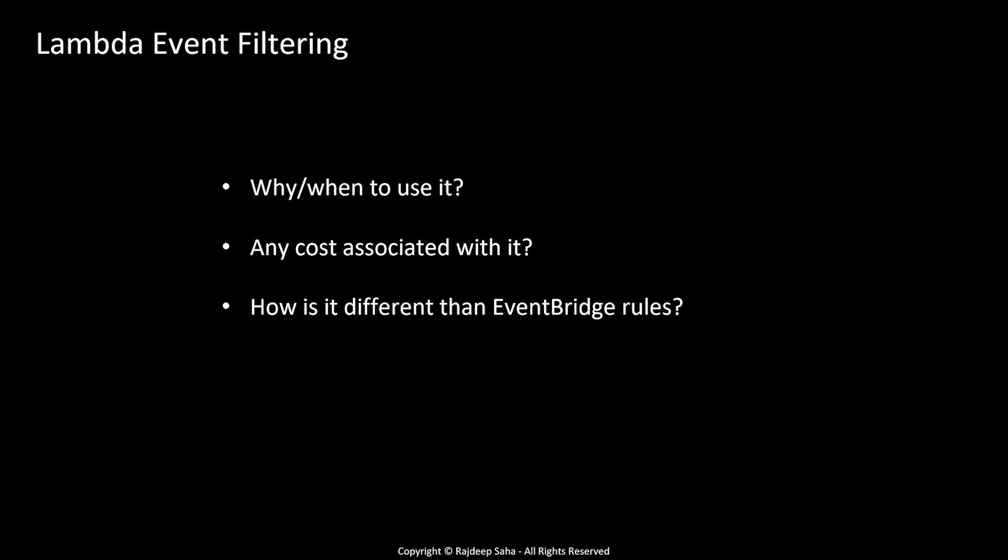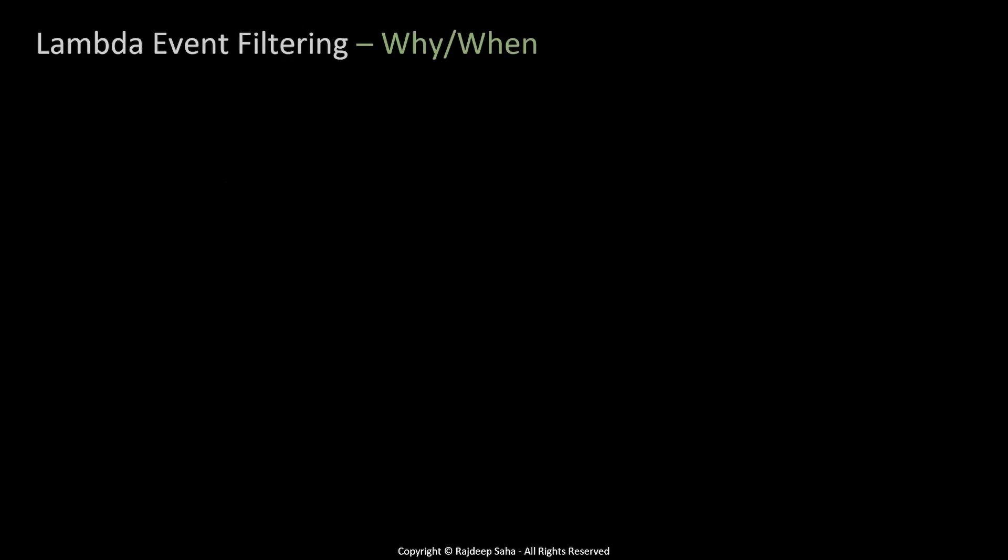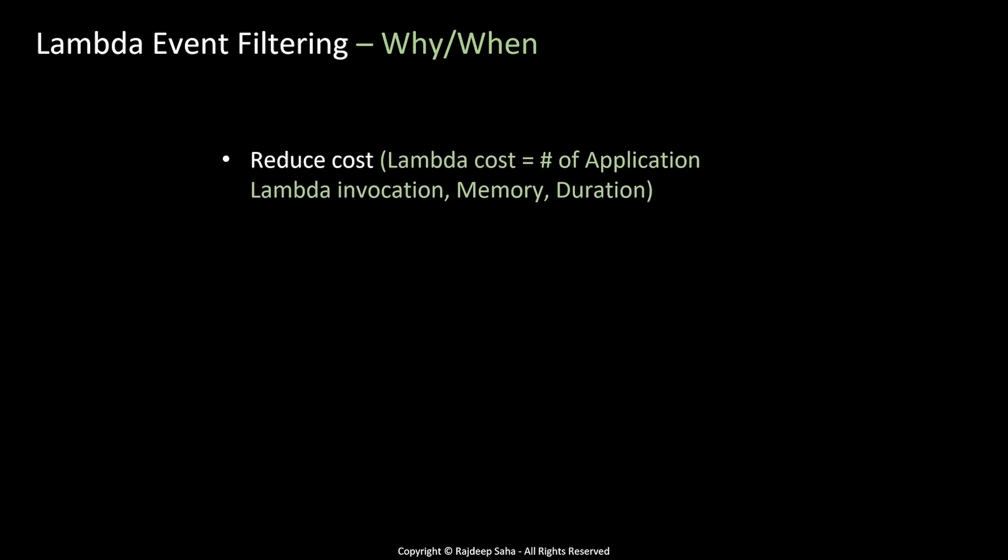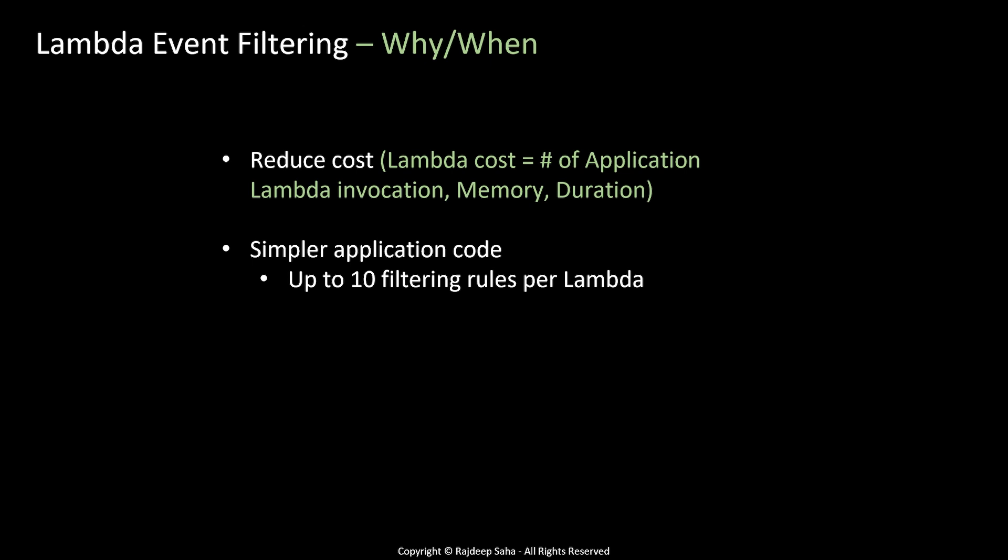This is how it differs from EventBridge, but more on that later. Why and when to use it? You can use this feature to reduce cost, because your Lambda cost depends on the number of invocations, memory allocated, and duration. With Lambda event filtering, you only invoke the Lambda when needed, reducing invocations. It also makes application code simpler — you don't have to write code to check and discard messages. You can have up to 10 filtering rules per Lambda; by default it's five, but you can request AWS to increase it to 10.